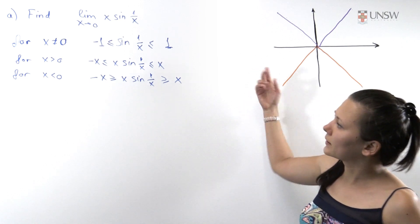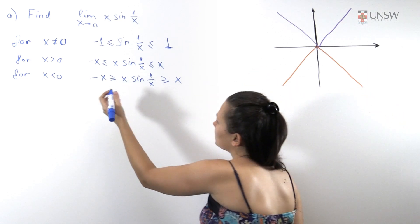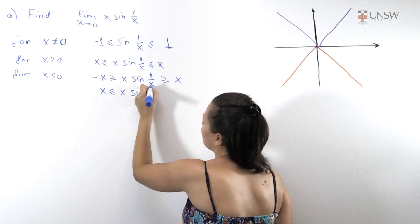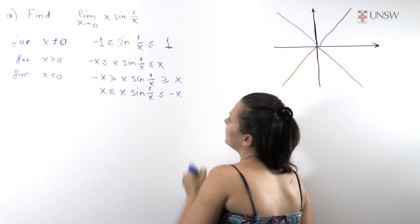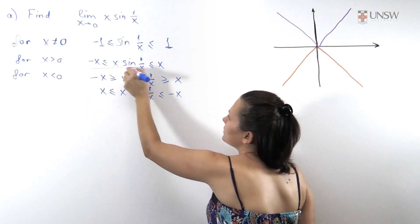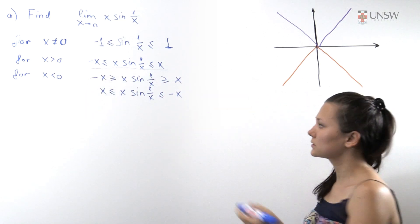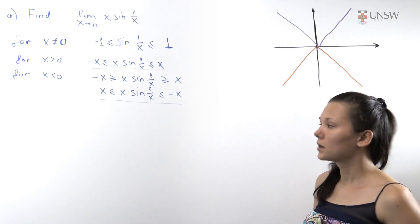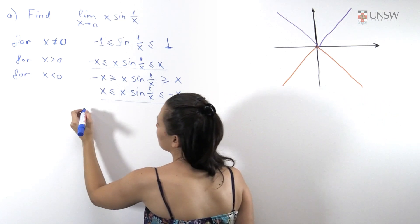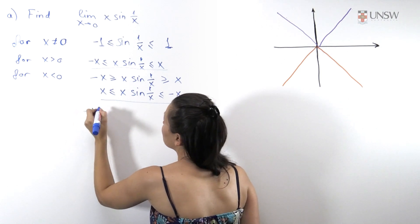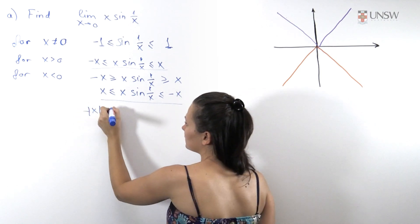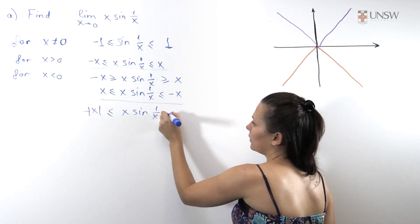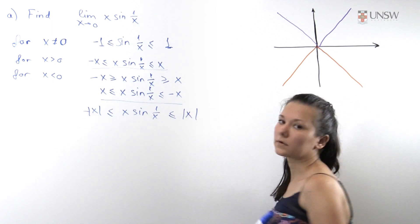So we have the estimate in this form: for positive values of x we get x ≤ x·sine(1/x) ≤ x, and for negative values of x the inequality is reversed. We can rewrite it uniformly as minus the absolute value of x is less than or equal to x sine 1 over x and less than or equal to the absolute value of x.